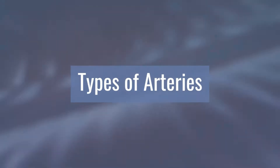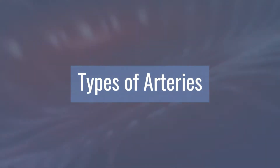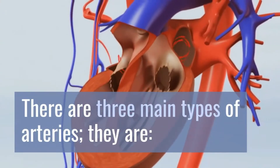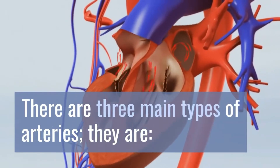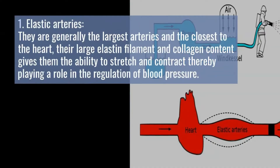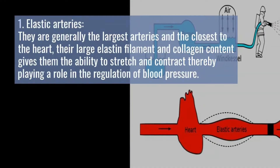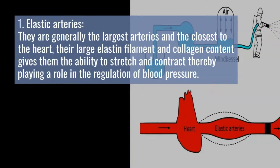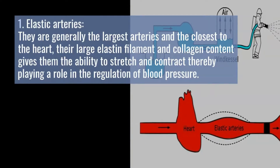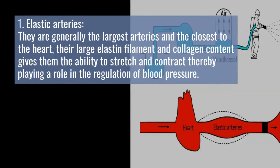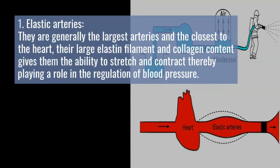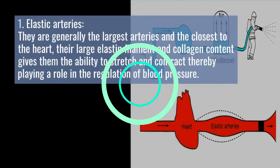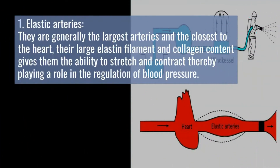There are three main types of arteries. First, elastic arteries: they are generally the largest arteries and the closest to the heart. Their large elastin filament and collagen content gives them the ability to stretch and contract, thereby playing a role in the regulation of blood pressure.